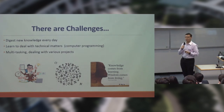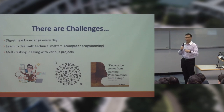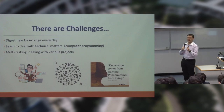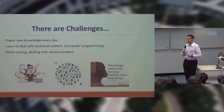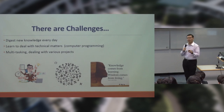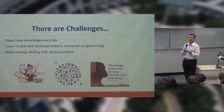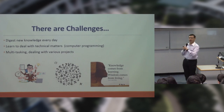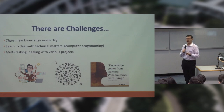Last but not least, there are many challenges as a graduate student. You need to digest new knowledge; your supervisor might ask you what something is and you have to tell him boldly that you really understand the topic — and then he'll say 'okay, you teach me.' When working in applied science, you need to learn technical matters like computer programming, which is very important in current life. You also have to handle a lot of projects, so you need to do multitasking.